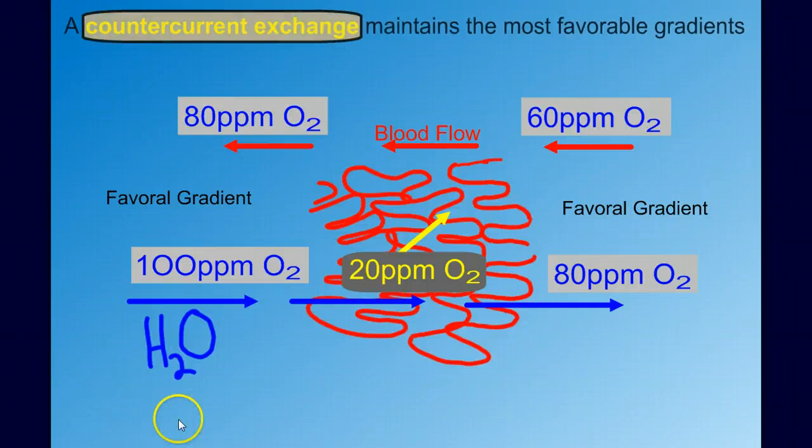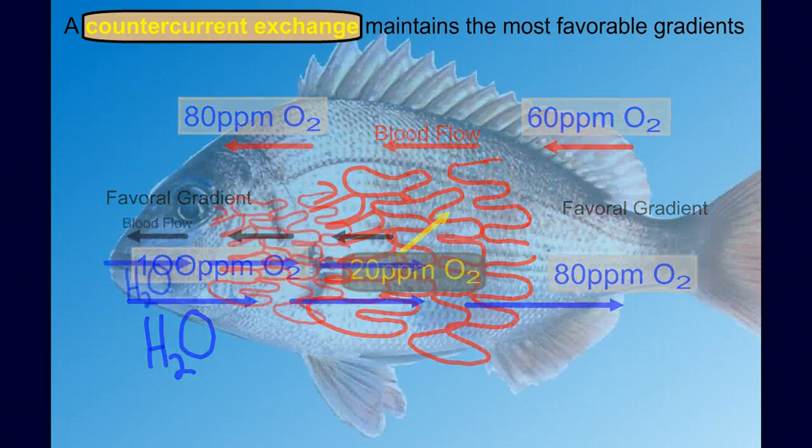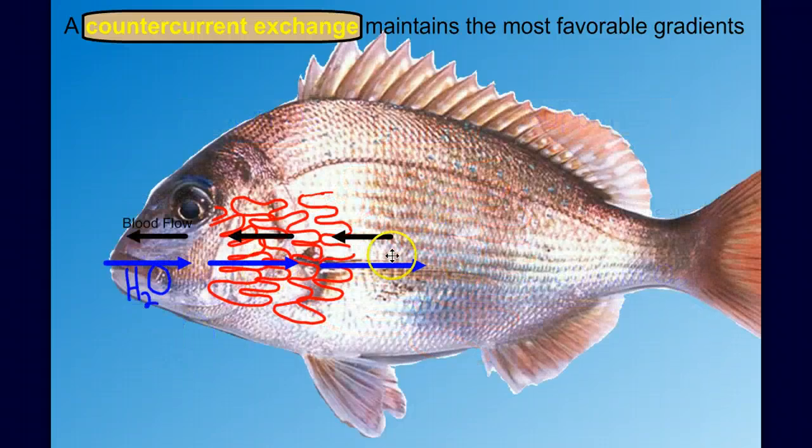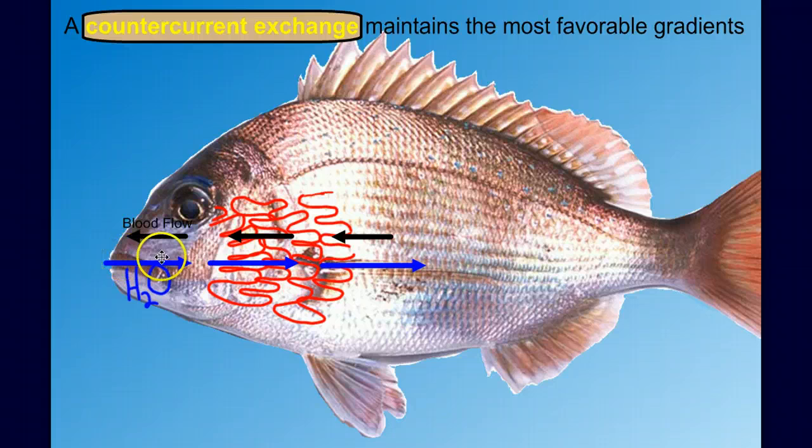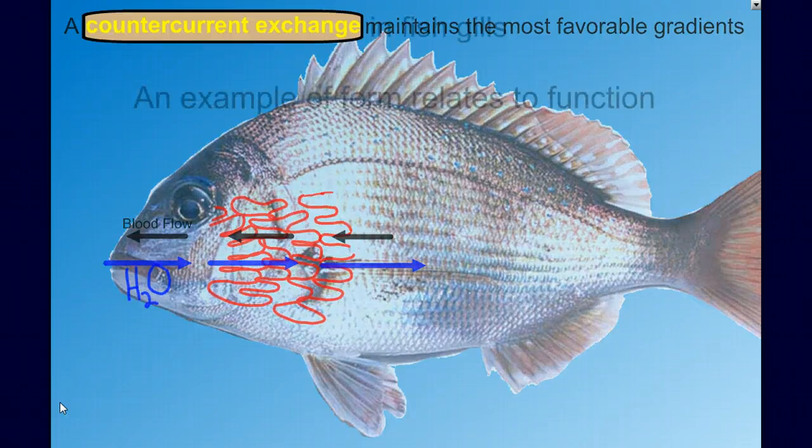This countercurrent exchange flow maintains the most favorable gradients for gas exchange. We can put the system back into our fish and we see that the countercurrent—the blood flowing from the back of the gills towards the front and the water flowing from the front towards the back—is going to give us the most favorable exchange gradient. This is a very good example of form relating to function in a biological system.